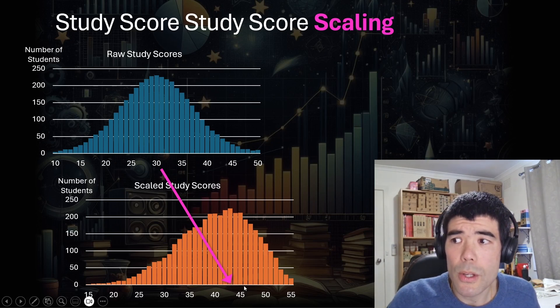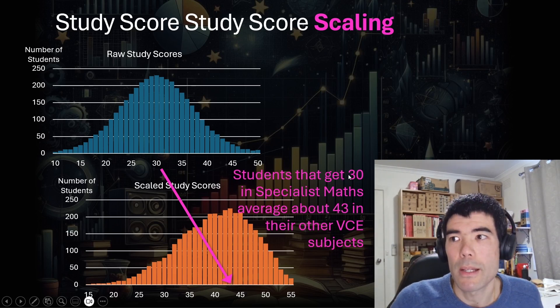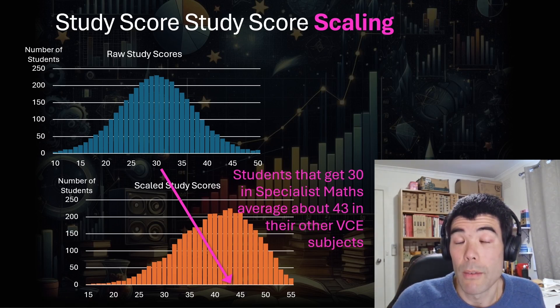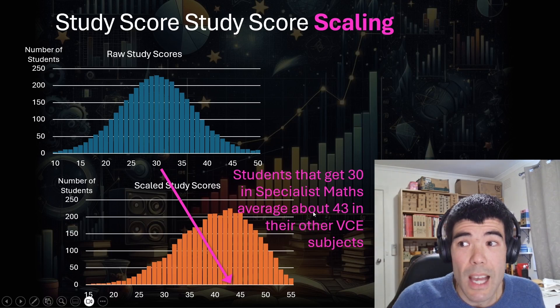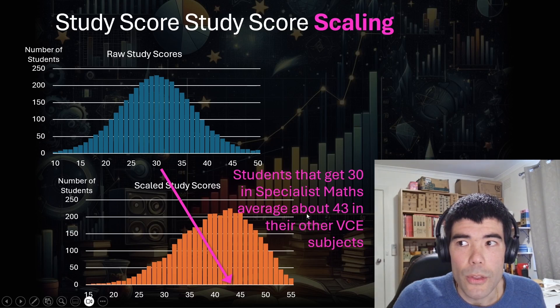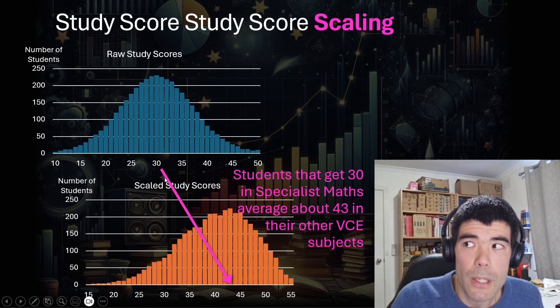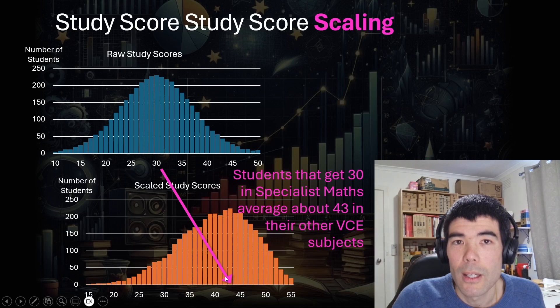So why does 30 go up to 43? What that means is the students who've got 30 in specialist maths, and when the VTAC look at their results in their other subjects, they tend to average about 43. The specialist math students have all done different subjects, but there's like 4,000 students. Once you look at all the students and all their different VCE subjects that they've done, it's evident that those students who have scored 30 in specialist maths have actually scored very highly in the other subjects. So that tells the VTAC, we need to scale up those specialist math scores by quite a lot.